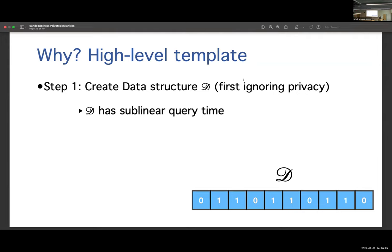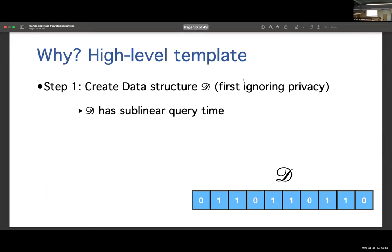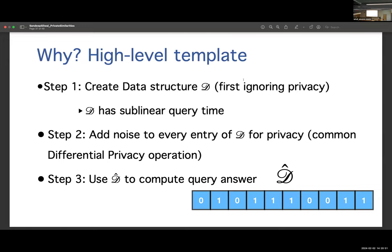So what is it? In the first step, let me just create a data structure to solve this query problem, ignoring privacy, but I really want the data structure to have sublinear query time. That's going to be super important. You can imagine the data structure is just like an array of numbers. In the RAM model, there's some array somewhere and a bunch of numbers in every cell. The next step is we're going to add noise to every entry of this array that defines our data structure. Some bits got flipped. I'm not going to say how we add the noise, but we add in a way that introduces privacy. And then we're going to just use the noisy data structure to compute the query.